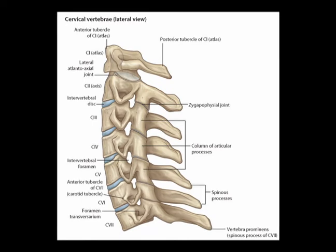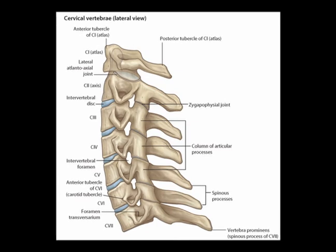So again, C1 and C2 are known as atypical vertebrae. C1 is the atlas. C2 is the axis.